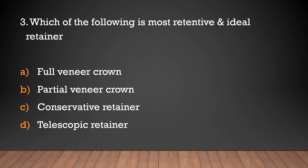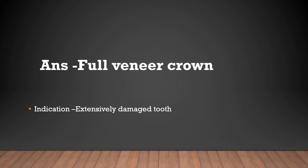Which of the following is the most retentive and ideal retainer? Full veneer crown, partial veneer crown, conservative retainer, or telescopic retainer? The answer is full veneer crown. Full veneer crowns are the most retentive and ideal retainers, indicated for extensively damaged teeth.